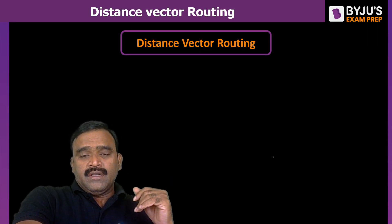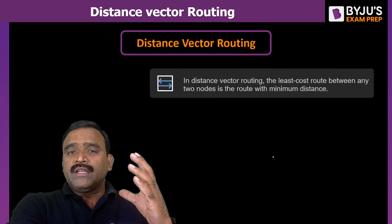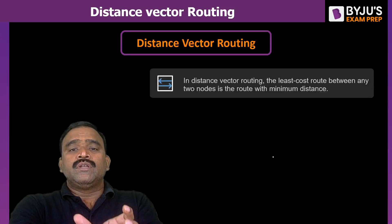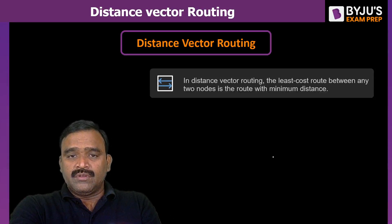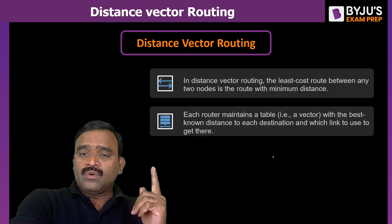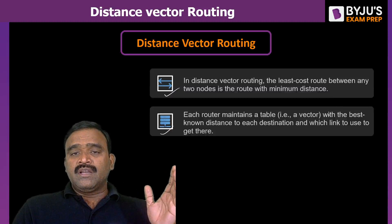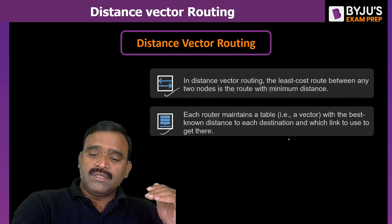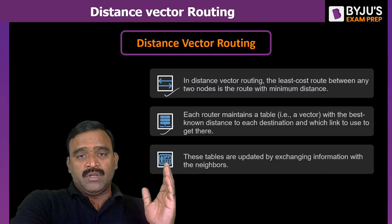What do we mean by distance vector? Distance vector routing is an adaptive routing technique. Adaptive means we can get updated information as and when some changes are made to the subnet. Any change in routing information will be reflected in every router's routing table. In distance vector routing, the least-cost route between any two nodes is the route with the minimum distance. Each router maintains a table called a vector, which is the best known distance to each neighbor and to all other nodes in the network. These tables are updated by exchanging information with neighbors.